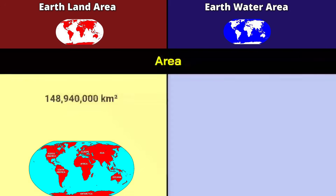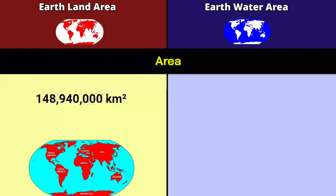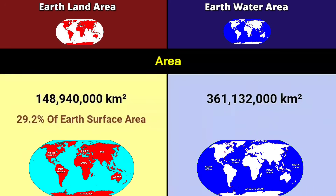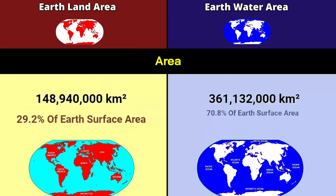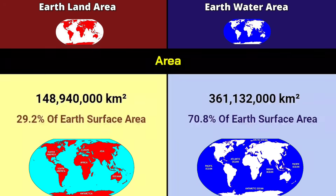Area: land area is 148.94 million square kilometers, which is 29.2% of earth's surface area. Water area is 361.13 million square kilometers, which is 70.8% of earth's surface area.